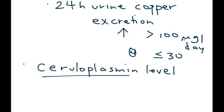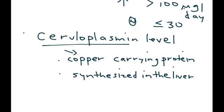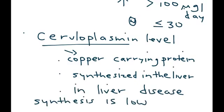Ceruloplasmin is a copper-carrying protein that is synthesized in the liver. In liver disease such as Wilson disease, the synthesis of ceruloplasmin is deficient, so ceruloplasmin levels will be low.